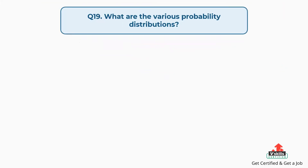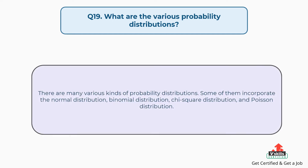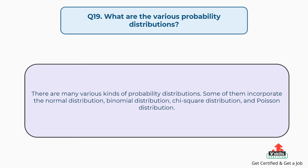Question number 19: what are the various probability distributions? The answer is, there are many various kinds of probability distributions. Some of them include the normal distribution, binomial distribution, chi-square distribution, and Poisson distribution.